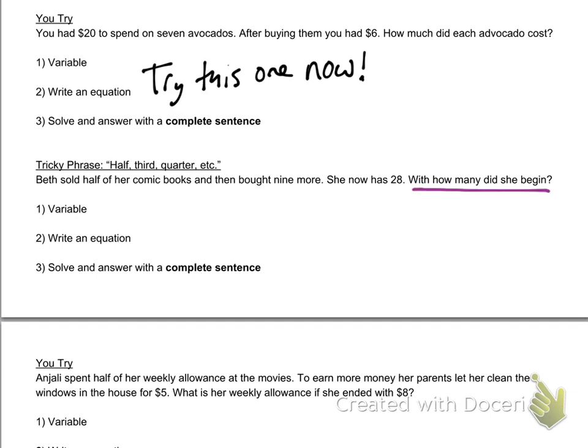Pause the video and try that next problem. Now that you've tried, I've got a tricky phrase here. If the word half or third or quarter comes up, we need to know what that looks like in the equation. It says how many did she begin with? I'm going to define that variable as C, which is how many comic books Beth started with.